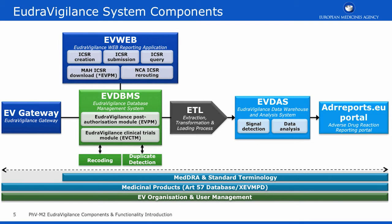This diagram provides an overview of the EudraVigilance system and how the components are connected. In addition, it shows key reference sources used by EudraVigilance, such as MedDRA and the Article 57 database.